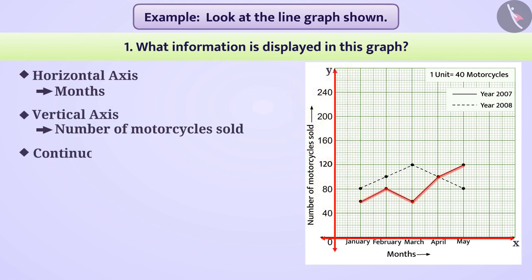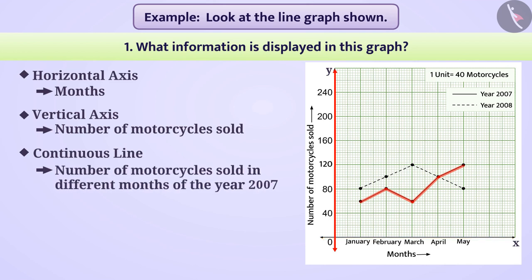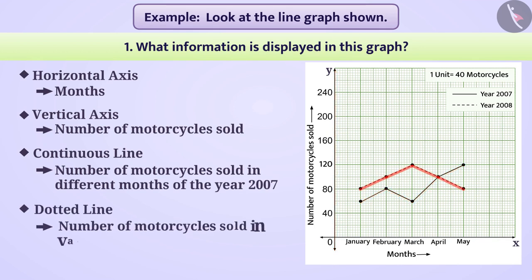In this way, the continuous line shows the number of motorcycles sold in different months of the year 2007, and the dotted line shows the number of motorcycles sold in various months of the year 2008. The graph compares the number of motorcycles sold in various months of year 2007 and year 2008.